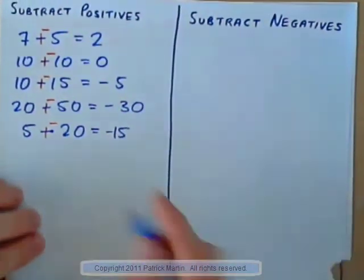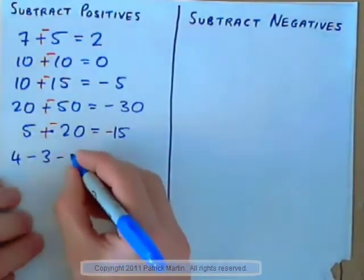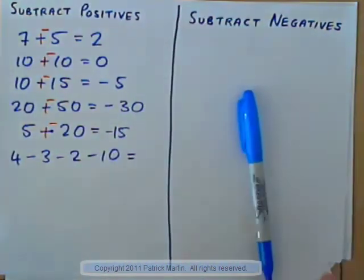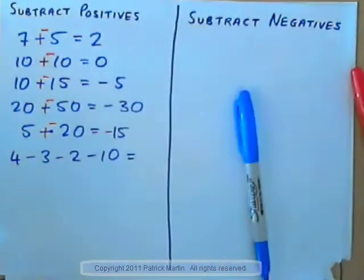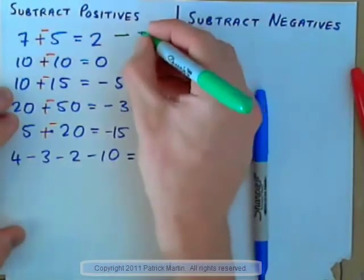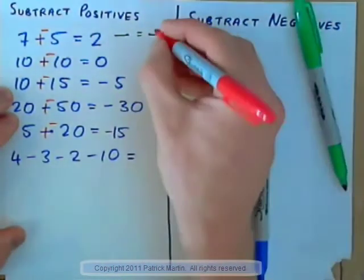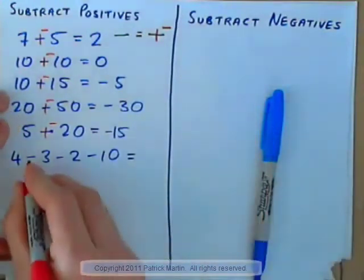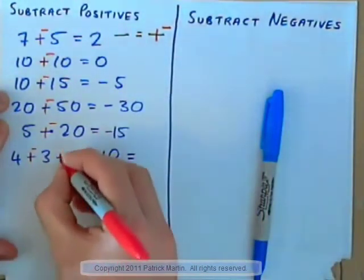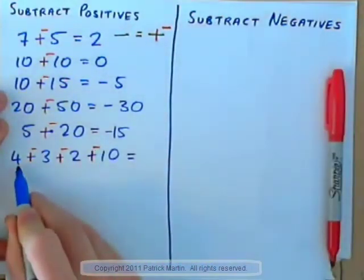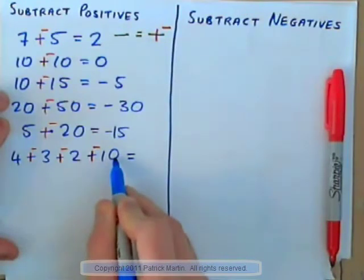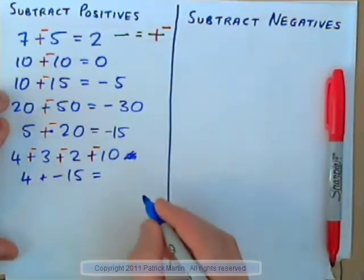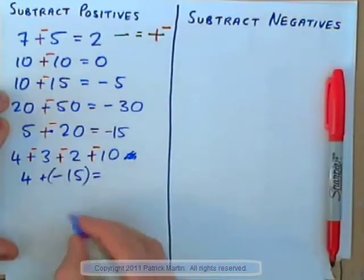Just for fun, let's do 4 minus 3 minus 2 minus 10. Subtraction can be changed to adding the opposite — subtracting can be changed to plus negative. So each subtraction sign becomes plus negative: positive 4 plus negative 3 plus negative 2 plus negative 10. That's positive 4 plus negative 15, which makes negative 11.